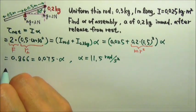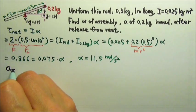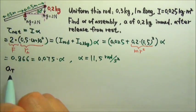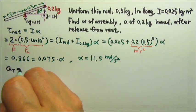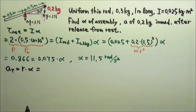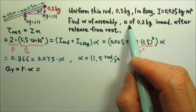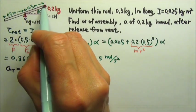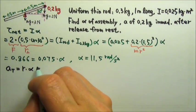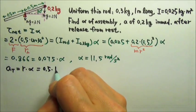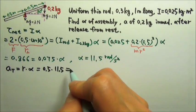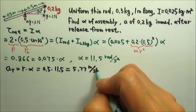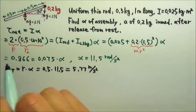With α, we can find the tangential acceleration, because this assembly is rotating about a fixed axis. So the tangential acceleration is r times α. We want the acceleration of the 0.2 kilogram mass, so the r for the 0.2 kilogram mass is 0.5 meters. Times the 11.5 for α, we get 5.77 meters per second squared, and that's the tangential acceleration.